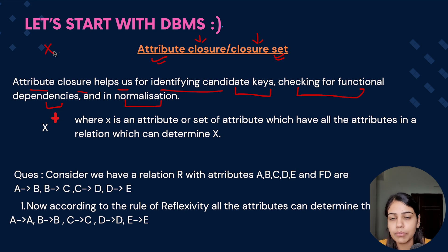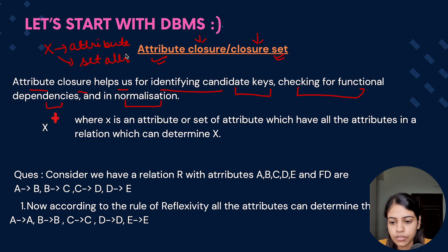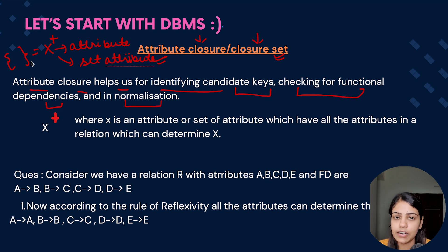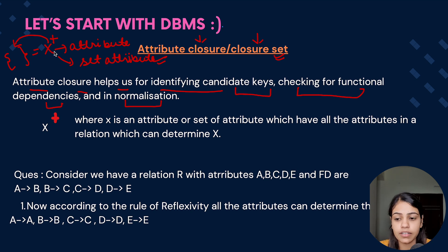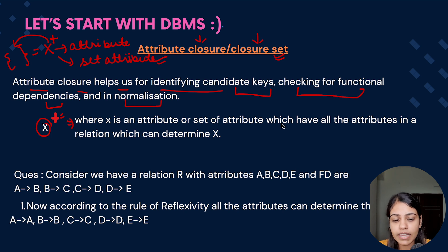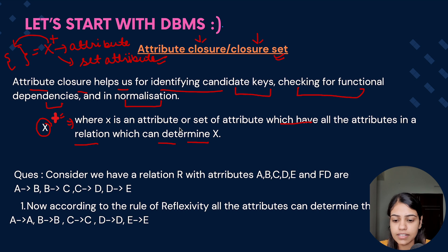Whenever there is an attribute x — which can be an attribute or a set of attributes — the closure set of this particular attribute is denoted by the plus sign, and it gives me the set of all the attributes which can be determined by that attribute x. So closure of any attribute is denoted by plus sign and gives me all the attributes present in the relation which can be determined by x.